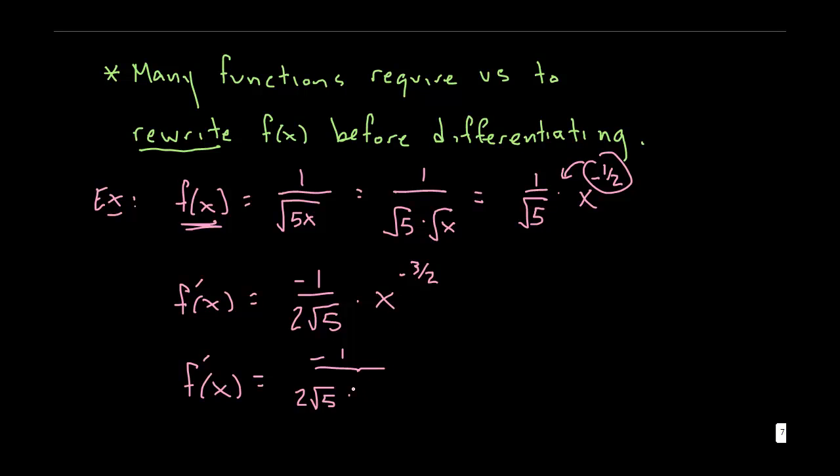Either times x to the positive three halves in the denominator, or you could say the square root of x to the third. That's also x to the three halves. So either way you say it's okay. And so that's how we differentiate. You have to rewrite many of these functions and then take the derivative and then simplify it.